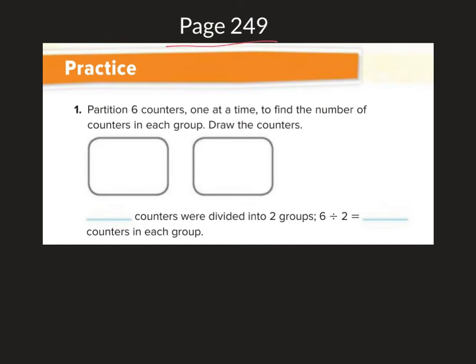This homework is on page 249. The first problem says: partition — which means separate into equal groups — six counters, one at a time, to find the number of counters in each group. Draw the counters. So I have six total counters. If I have six counters and I'm dividing them among two groups, I'm going to get three counters in each group. Six counters were divided into two groups. Six divided by two equals three counters in each group.